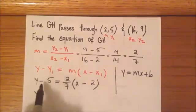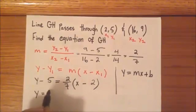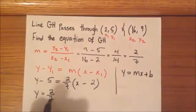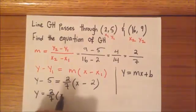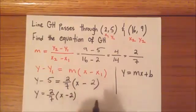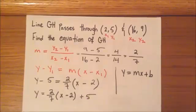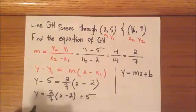So, we need to get y by itself here, so that means we have to move 5 to the other side. But we need to make sure that since it's negative 5, when we move it to this side, it's going to be positive 5. So, we're going to have 2 over 7 times x minus 2, then we're just going to move this 5, so it's going to be positive 5.